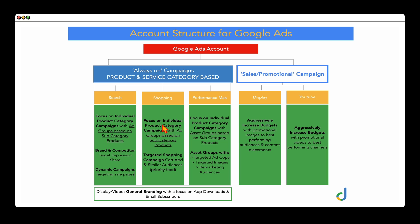If you have a client running sales or promotional campaigns, I generally add those as Display or YouTube campaigns. This allows me to aggressively increase those budgets without affecting my always-on campaigns. Outside of sales or promotional periods, I'll sometimes use those campaigns to focus on general branding, app downloads, or email subscribers. I don't want you to just copy this structure — what I want to show you is how to put together an account structure that you can tailor for your individual business or client's needs.